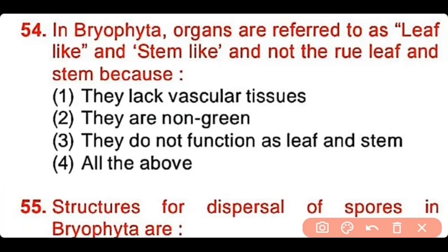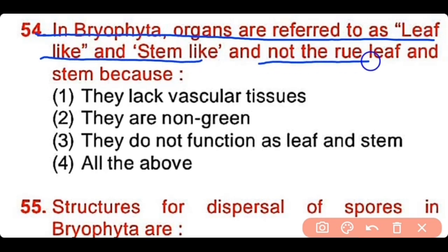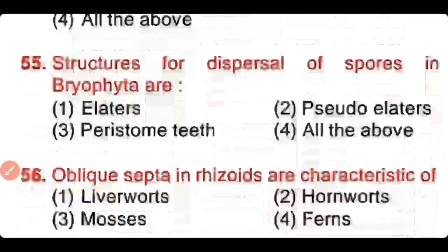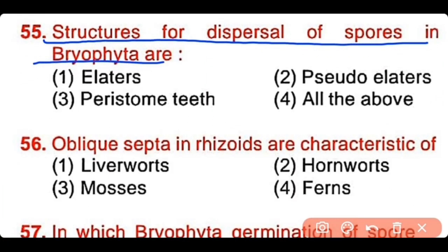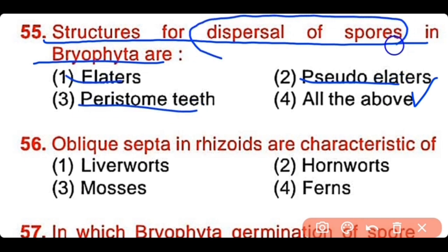Question number 54: In Bryophyta, the organs are referred to as leaf-like and stem-like and not true leaf and stem because they lack vascular tissue, they are non-green, they do not function as leaf and stem, or all of the above. The correct answer is option 1. Due to absence of vascular tissue, the organs of bryophytes are leaf-like and stem-like but are not true leaf and stem. Question number 55: The structures for dispersal of spores in Bryophyta are elaters, pseudo-elaters, peristome teeth, or all of the above. The correct answer is option 4 — pseudo-elaters, elaters, and peristome teeth are all structures used for dispersal of spores.